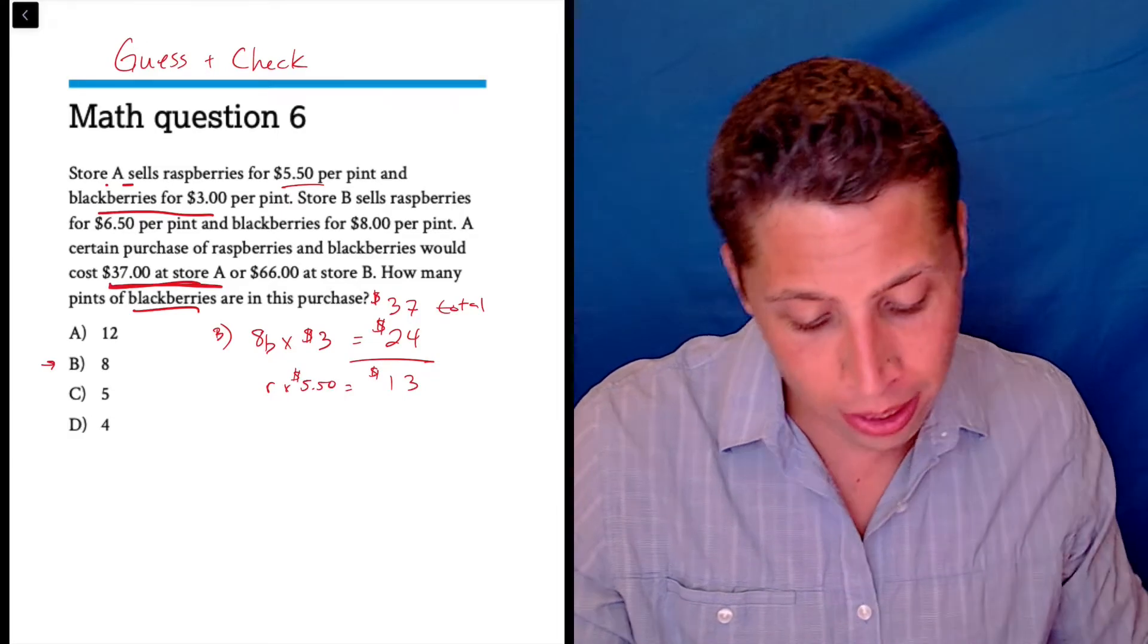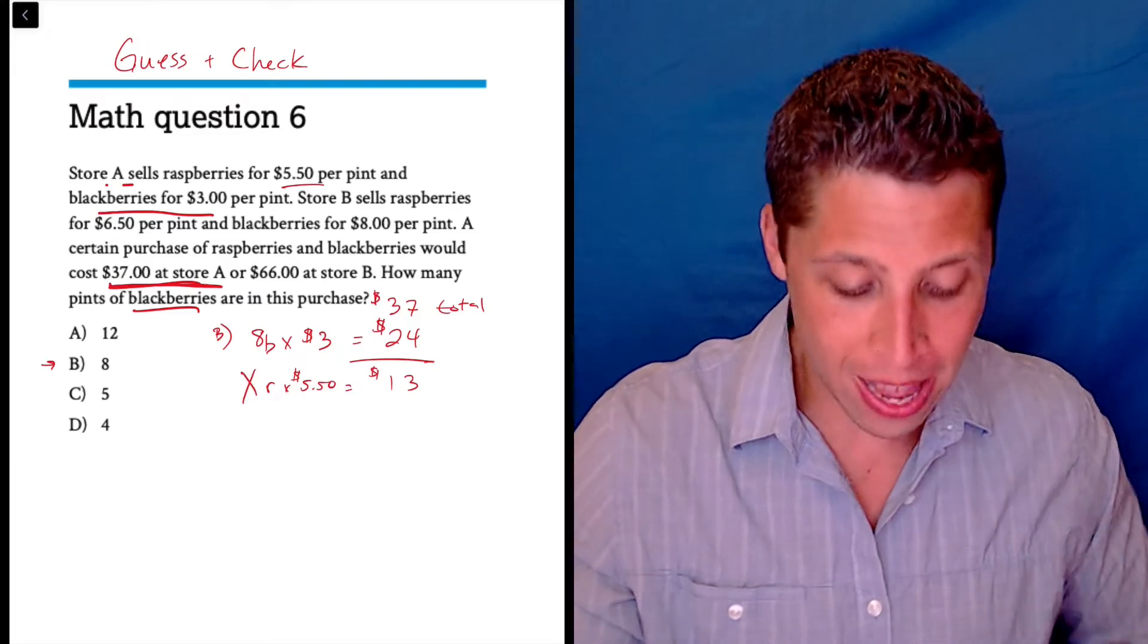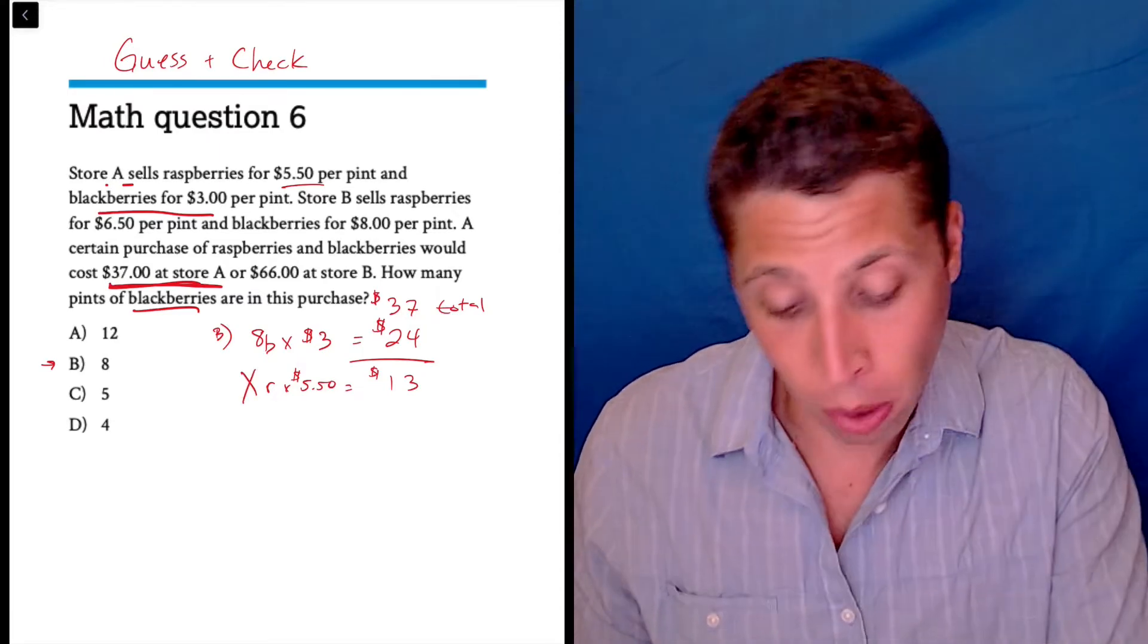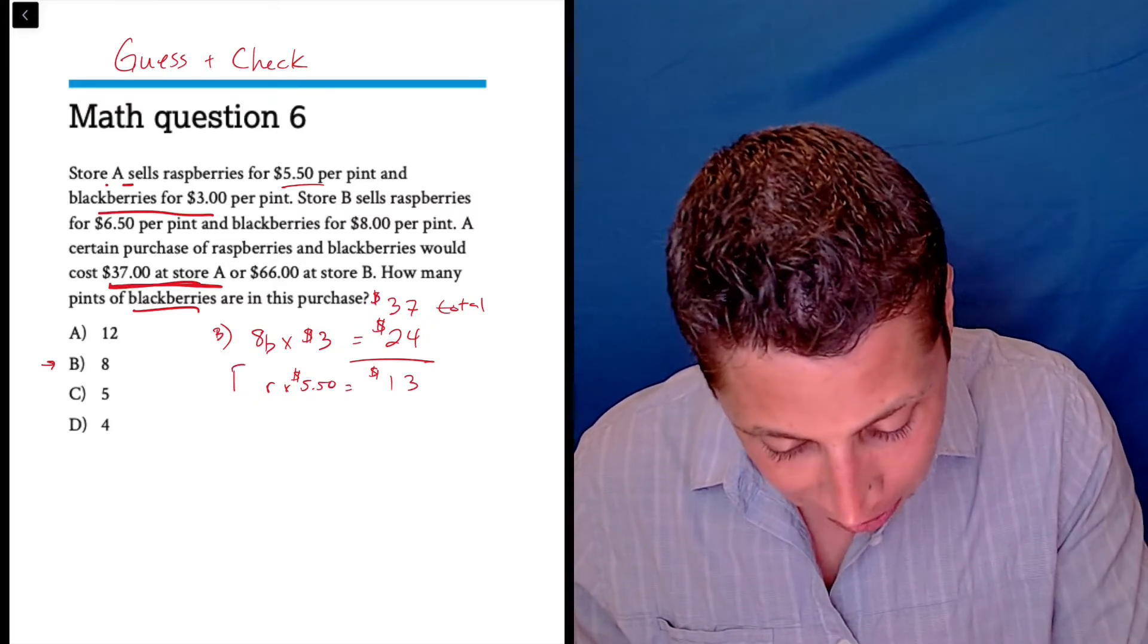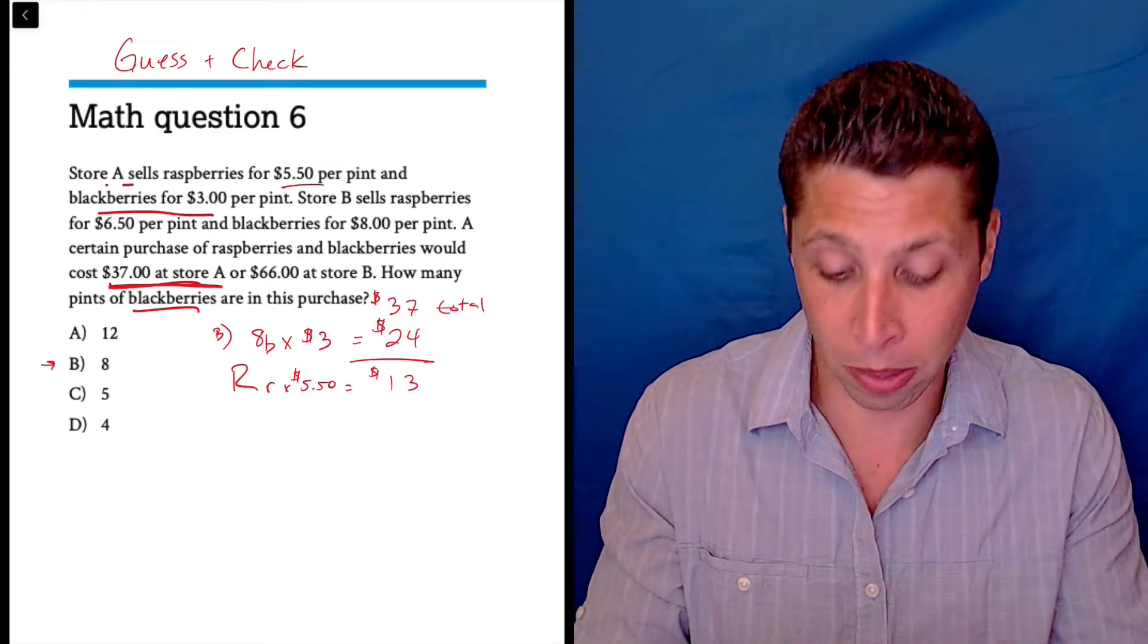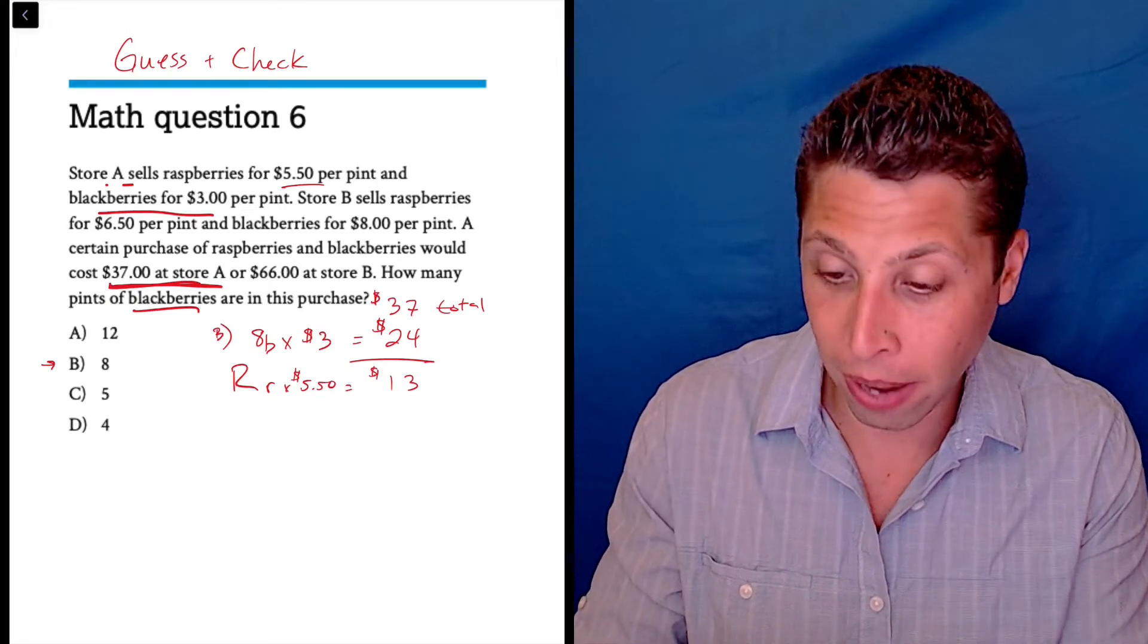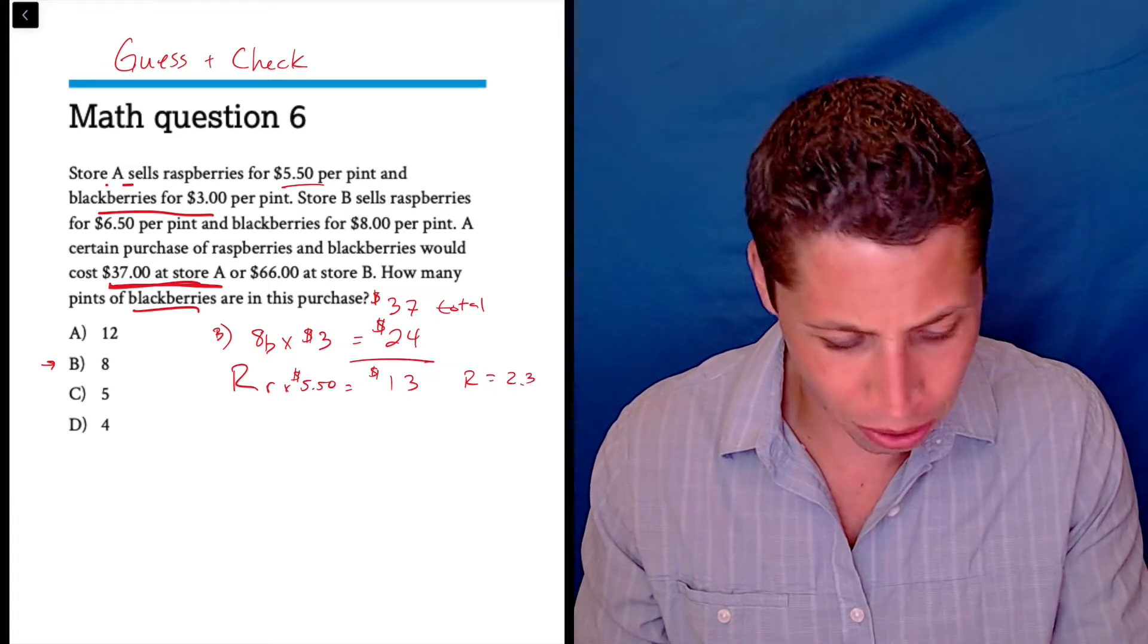See how we're kind of like building this? So now what I basically do is saying, okay, there's some X that I don't know, some number of raspberries. Let's just do R, actually. Let's keep it really straightforward. R is the number of raspberries that I don't know. And we can see, would it make sense? So here's where I take my nice calculator, which I'm going to have for every single math section. I would divide 13 by 5.50. And here I would get that R is 2.36.